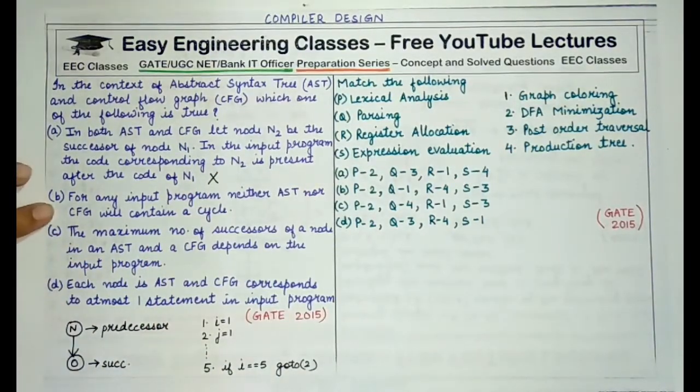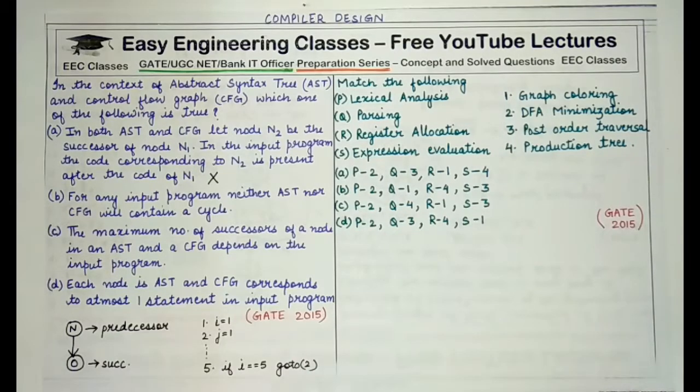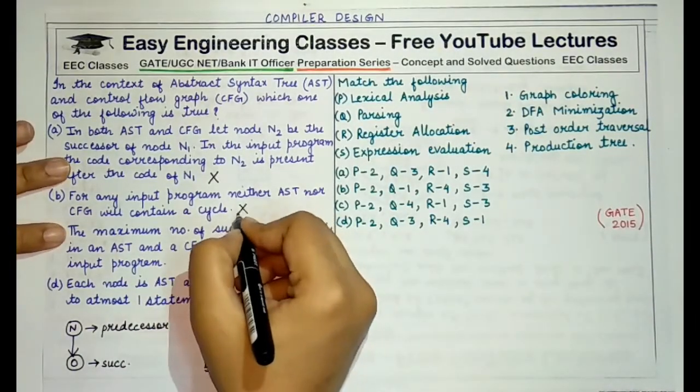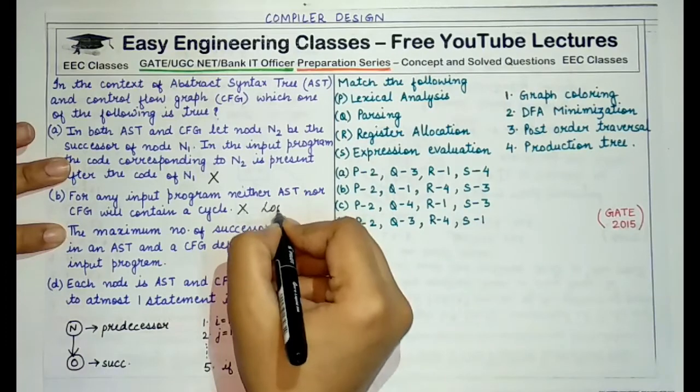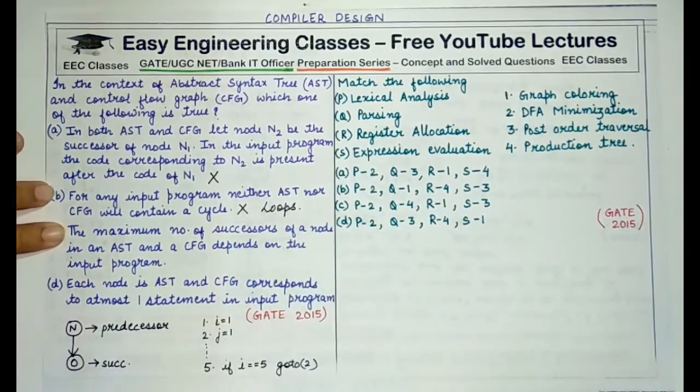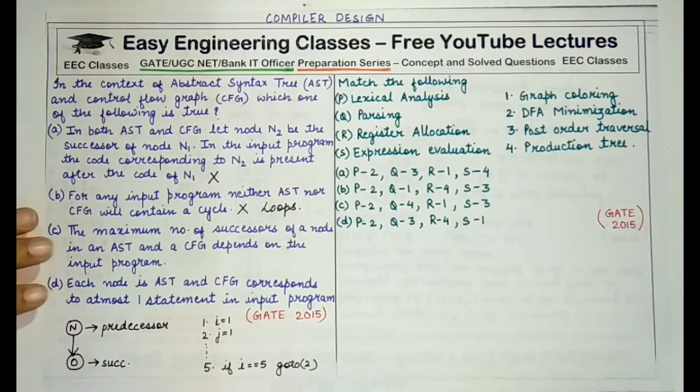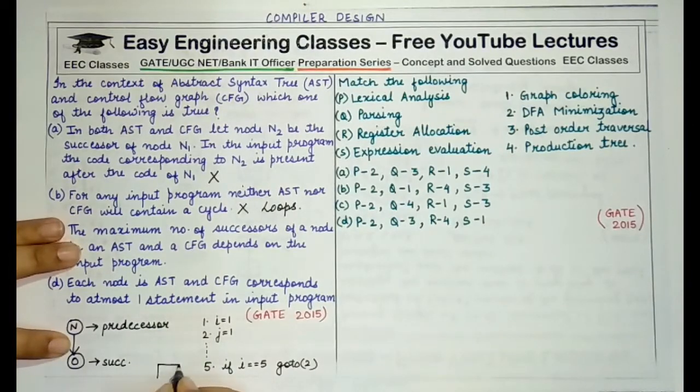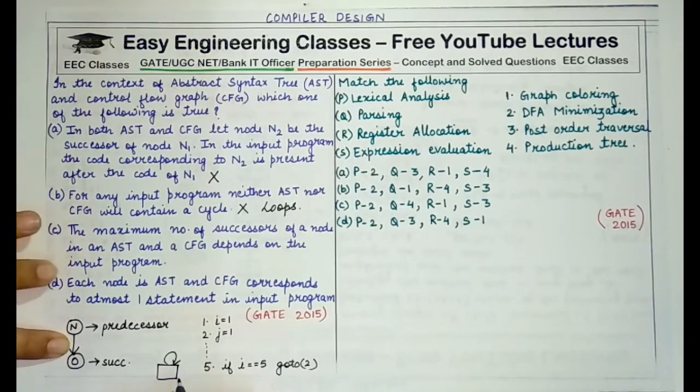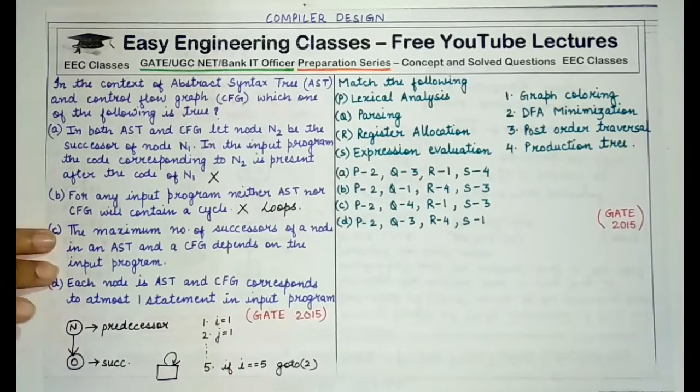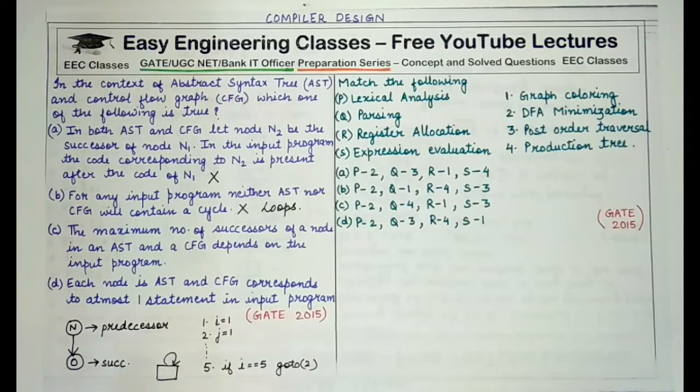Now coming to the second option: for any input program, neither AST nor CFG will contain a cycle. This is again incorrect. Why? In cases of loops, we can always have a cycle. That means if there are certain statements to be repeated, therefore there would exist an edge between a particular node and itself and that is known as a loop, that is a self-loop. Or there can exist a loop or a cycle between multiple edges also if they are being repeated. So this statement is incorrect.